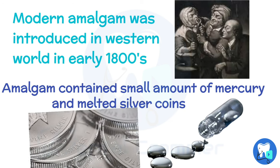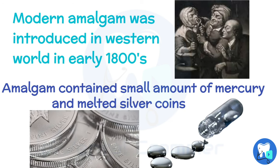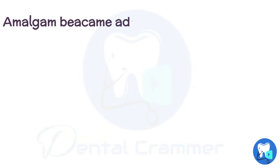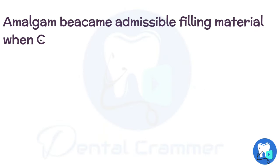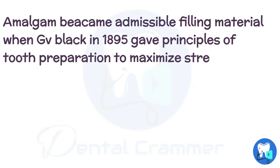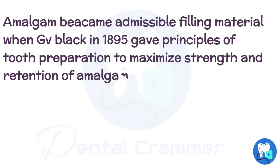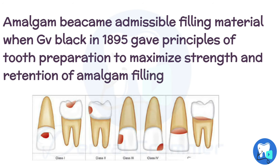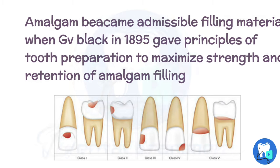At that time the major problem was with the retention of the filling. Amalgam became an admissible filling material when GV Black gave the principles of tooth preparation. By following these principles, amalgam had better retention and strength.